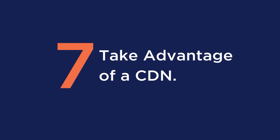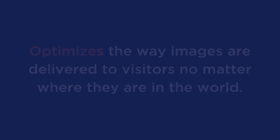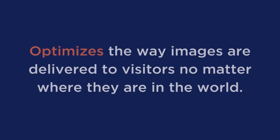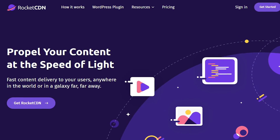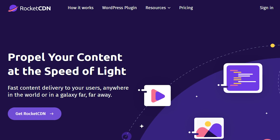Technique seven: take advantage of a CDN. Using an image CDN significantly reduces your traffic costs and increases your score on Google Page Speed Insights by optimizing how images are delivered to visitors no matter where they are in the world, reducing the amount of transferred data. Setting up a CDN from scratch can be overwhelming — you'll need to deal with DNS records and CNAME fields — so if you prefer an automatic installation, you may want to try Rocket CDN, which does the heavy lifting and configuration for you.